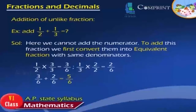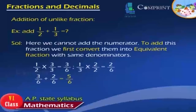Addition of Unlike Fractions. Example: add 1 by 2 plus 1 by 3. Solution: we cannot directly add the numerators. To add these fractions, we first convert them into equivalent fractions with the same denominators. That is, 1 by 2 multiplied by 3 by 3 equals 3 by 6, and 1 by 3 multiplied by 2 by 2 equals 2 by 6. So, 3 by 6 plus 2 by 6 is equal to 5 by 6.